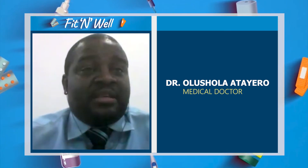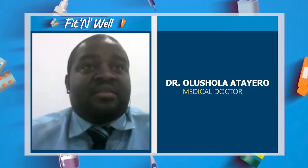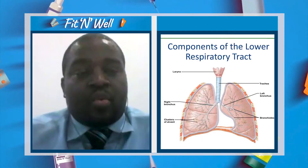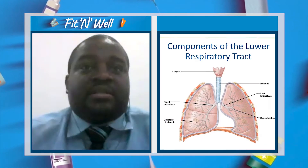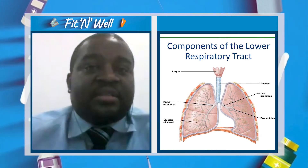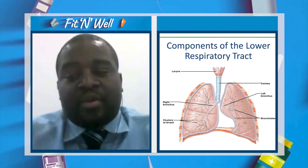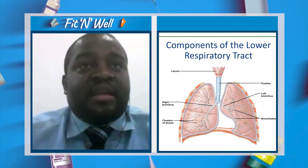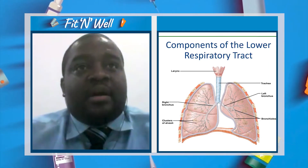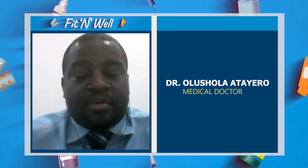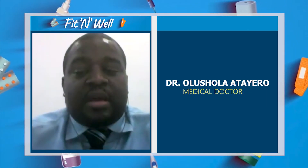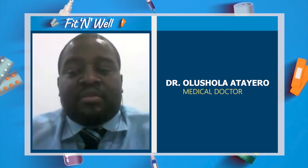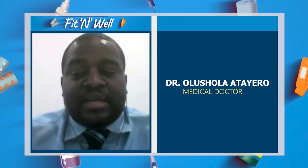The lower respiratory tract comprises the windpipe — that is the large airways — the bronchi, the small airways, the bronchioles, and the air sacs, the alveoli. I want to simplify it to your understanding rather than bore you with too many medical terms.